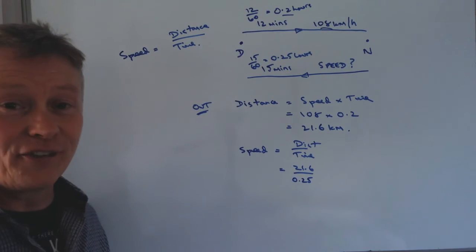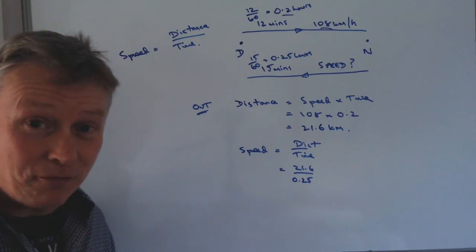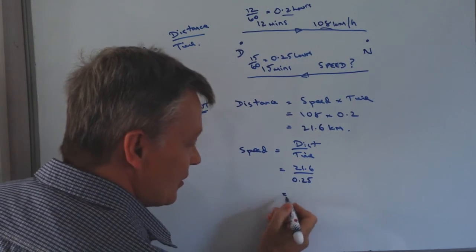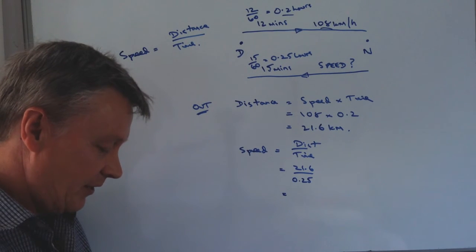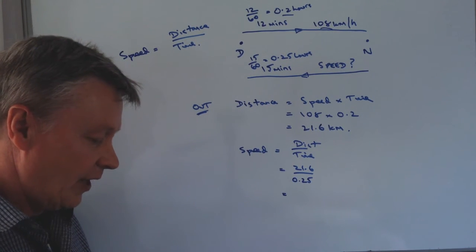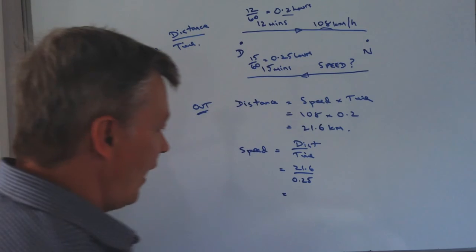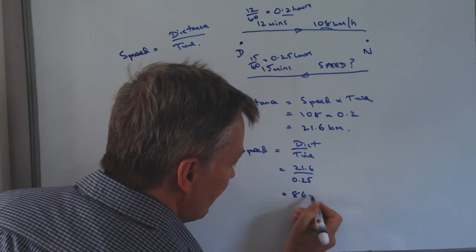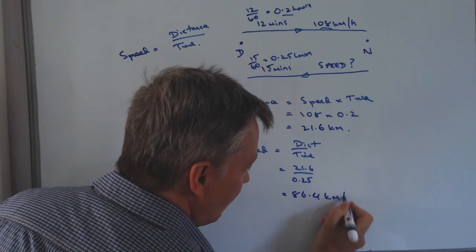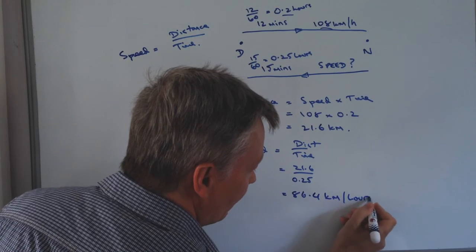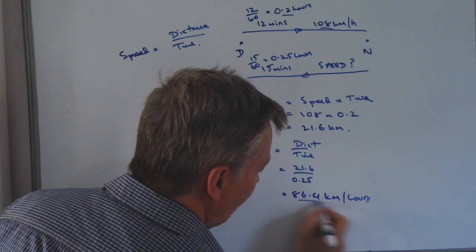So again I can't emphasize enough you need to make sure that you've got the same units when you're dealing with these sorts of questions. So it's 21.6 divided by 0.25, which is going to give you a speed of 86.4 kilometers per hour on the return journey.